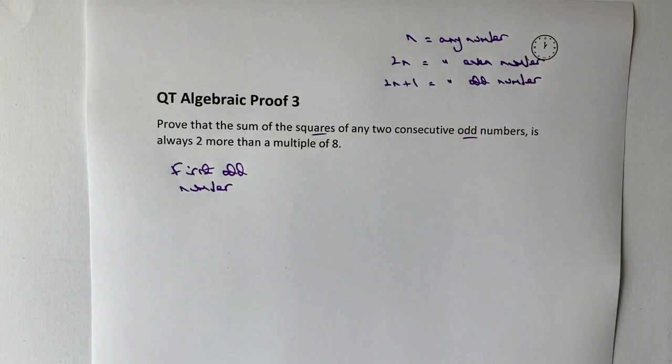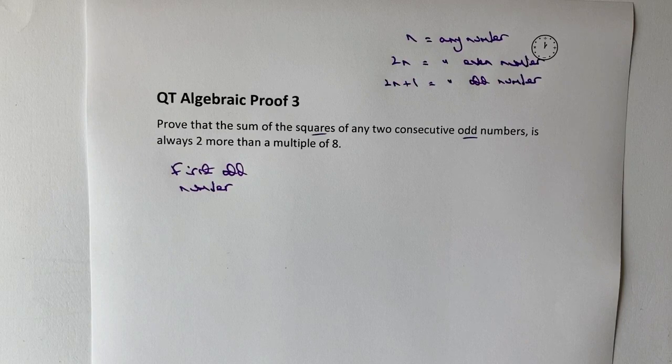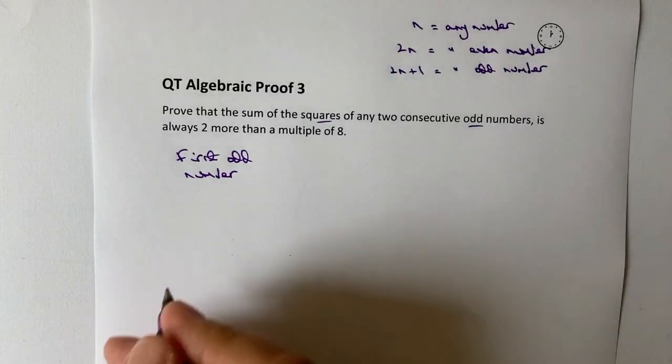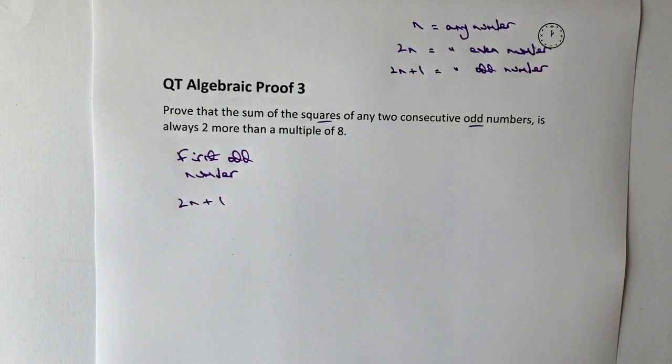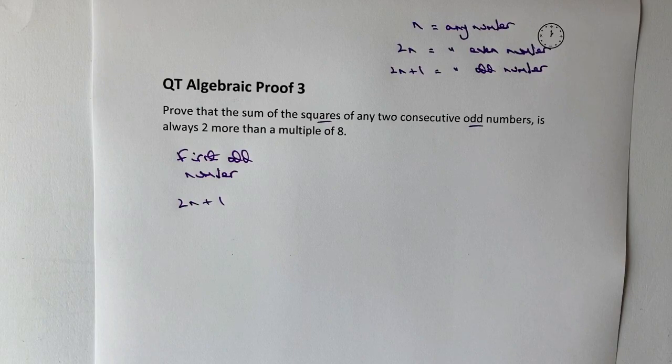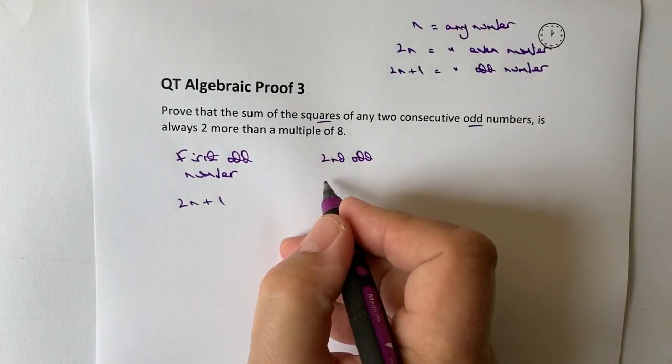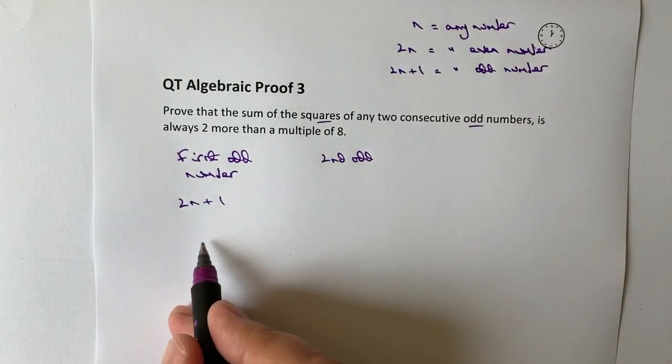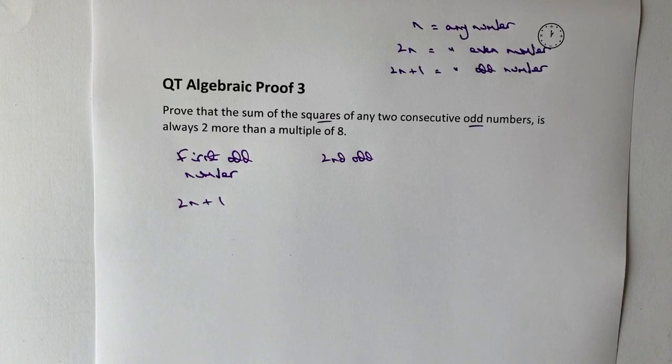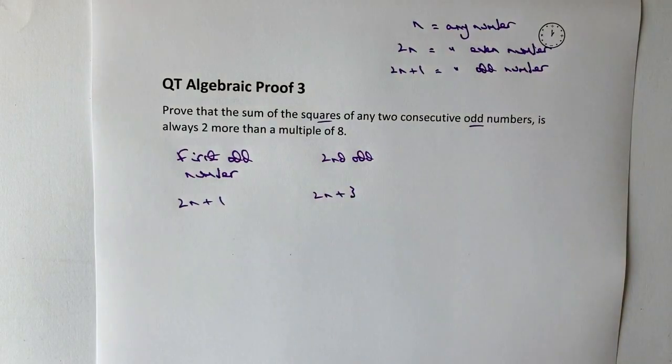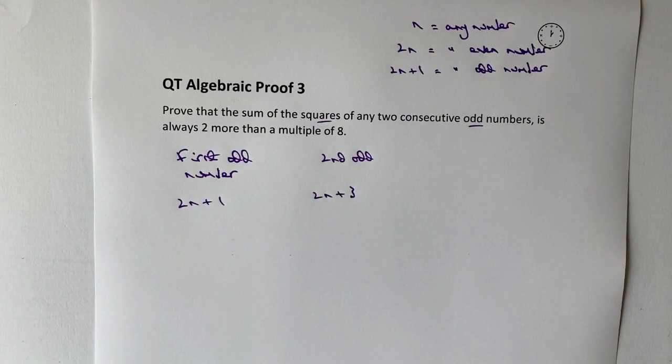So when you're looking at these sorts of problems, it's well worthwhile keeping those in mind, because then with this, I can say, well actually, my first odd number is going to be 2n plus 1. That's my first odd number. My second odd number is where I'm actually going to add another two to this. So 2n plus 1, and then it will be 2n plus 3. It's not 2n plus 2, because that would be an even number. So 2n plus 3 will give me my second odd number.